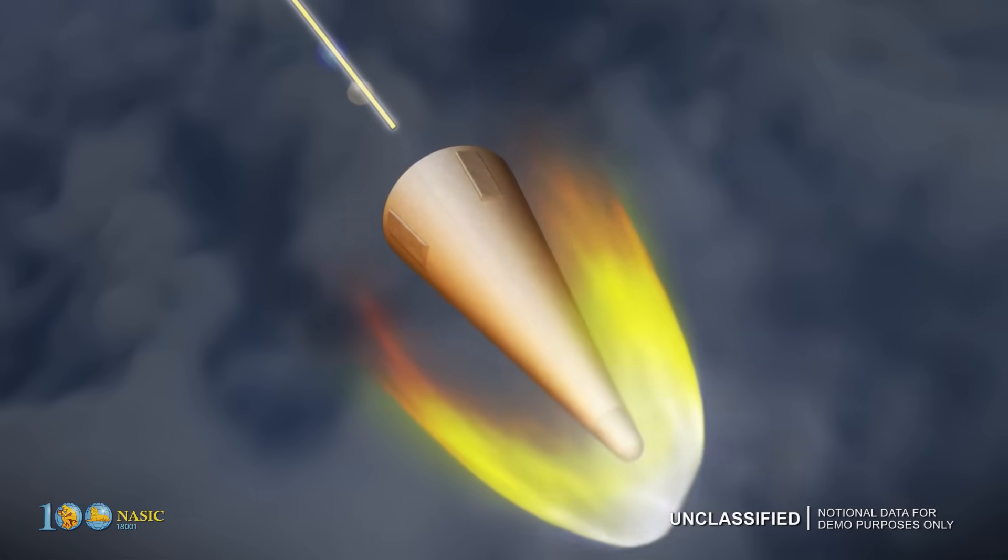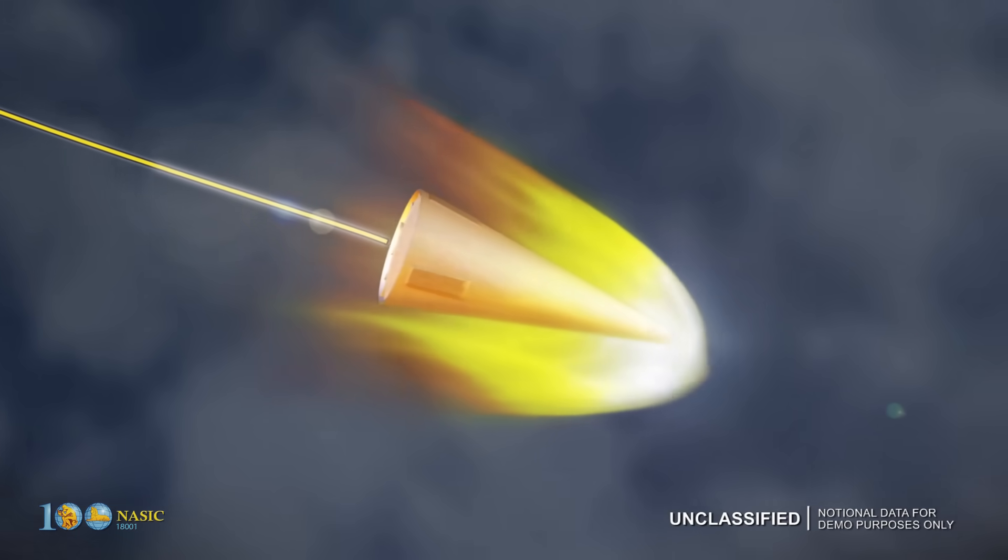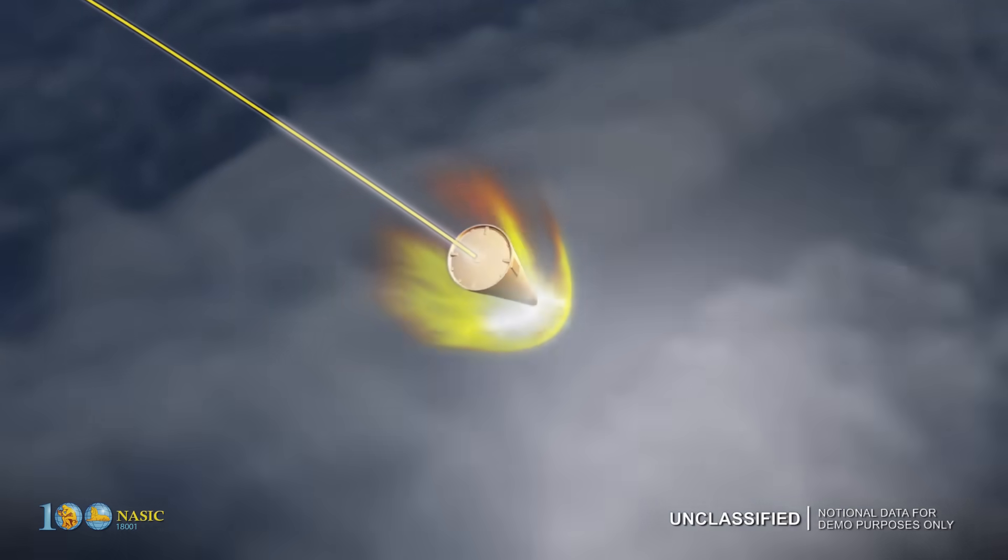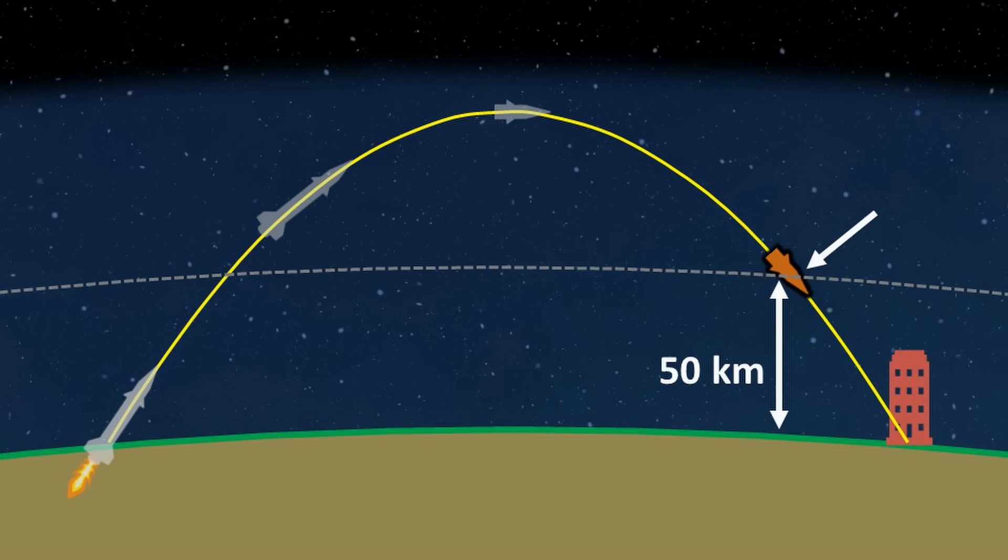Once it falls below 50 kilometers, it begins to encounter significant air resistance. Naturally, this friction with the atmosphere causes the missile to heat up. This is where the third and final phase of the missile's flight starts. This phase is known as the re-entry phase.